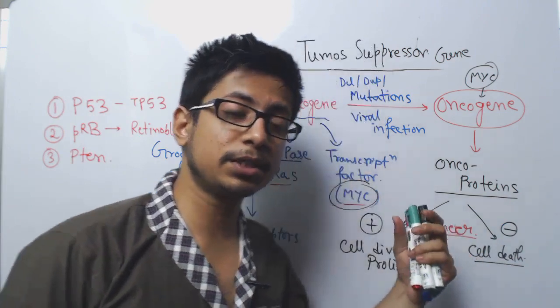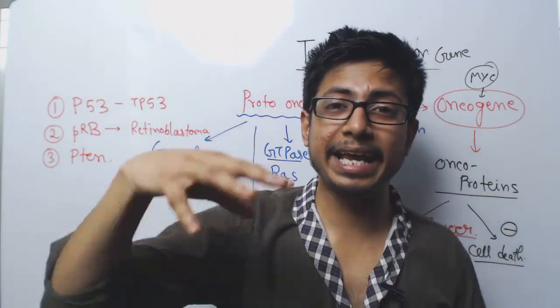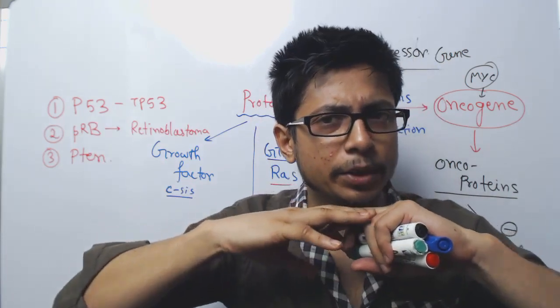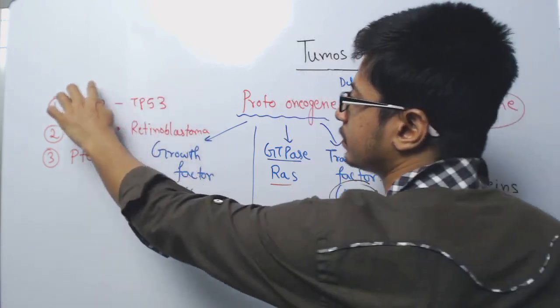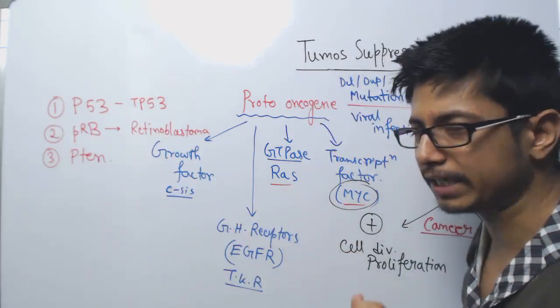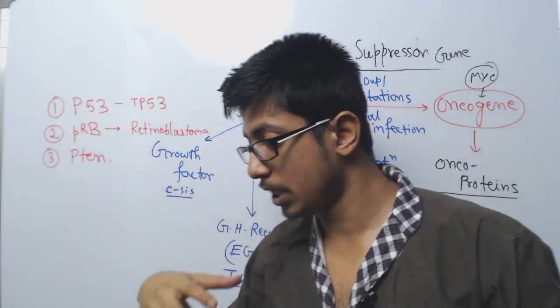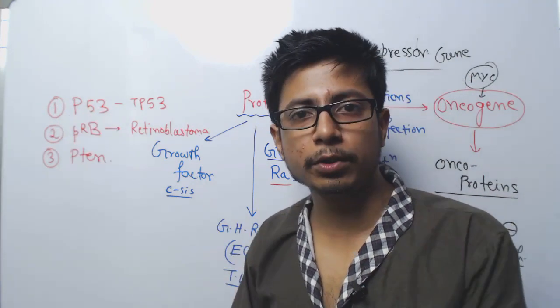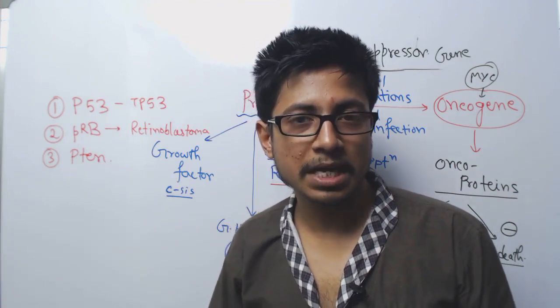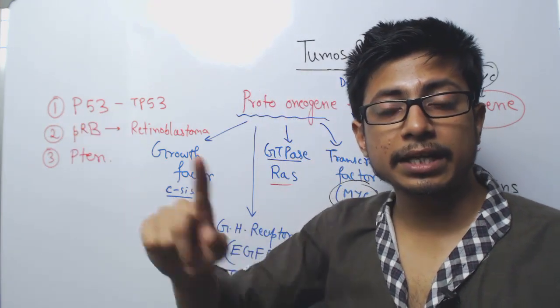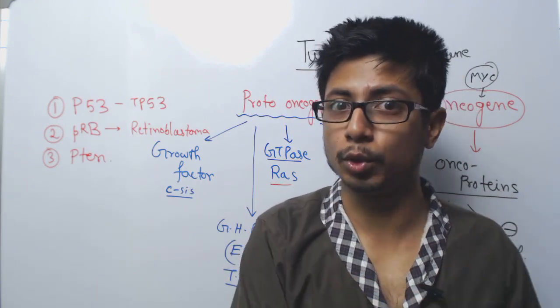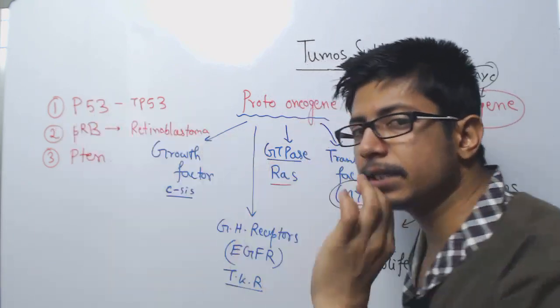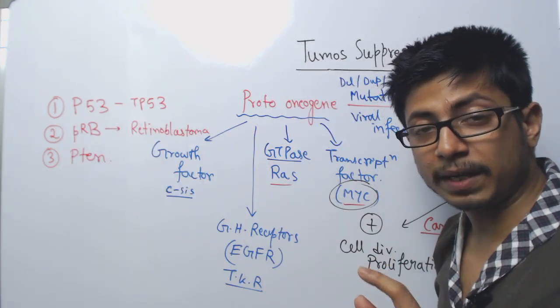Tumor suppressor gene products are present at every different checkpoint of the cell cycle. They are produced inside the cell all the time. For example, P53 protein is known as the cellular guardian of the cell cycle because it regulates the complete process. Inside the cell, P53 is being produced throughout the time, almost constitutively. It regulates its own concentration by creating another protein known as MDM2. I'm not going to talk about how P53 exactly works here, but it is always present inside the cell in inactive form.